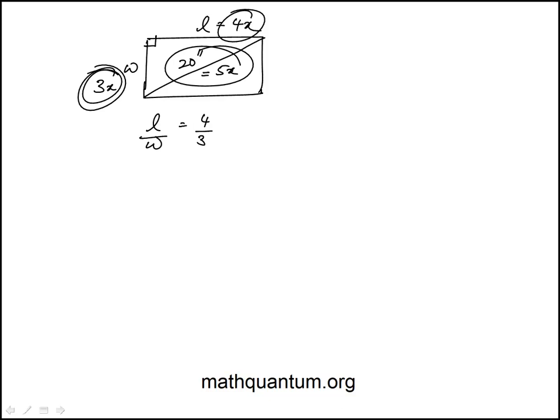This is the 3, 4, 5 triangle, which means x is 4 because 5x is 20. So we know that length is 16 versus 12.